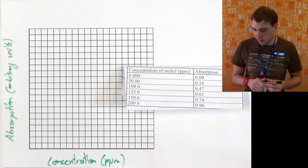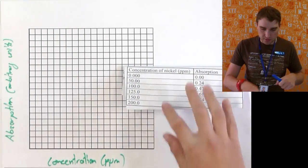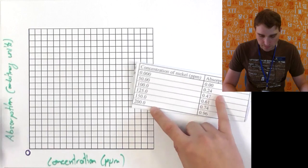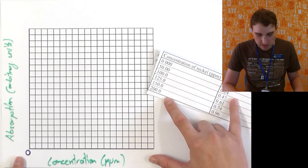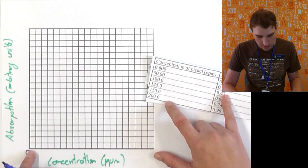Next thing I need to do is I need to figure out my scale. So for concentration here we go from 0 to 200. We have 0 down here. I've got 20 boxes across here because I counted that before. So that means each little box is going to be 10 parts per million.